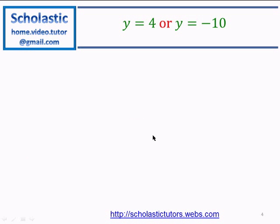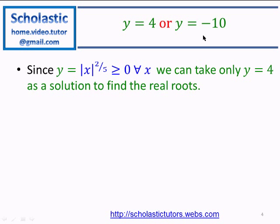From the factoring, y can be either 4 or negative 10. However, we used y equal to modulus x to the power 2 over 5, which is always a positive number for any value of x — it is greater than or equal to 0 for all x. Therefore, we can only take y equal to 4 as the solution to find the real roots.